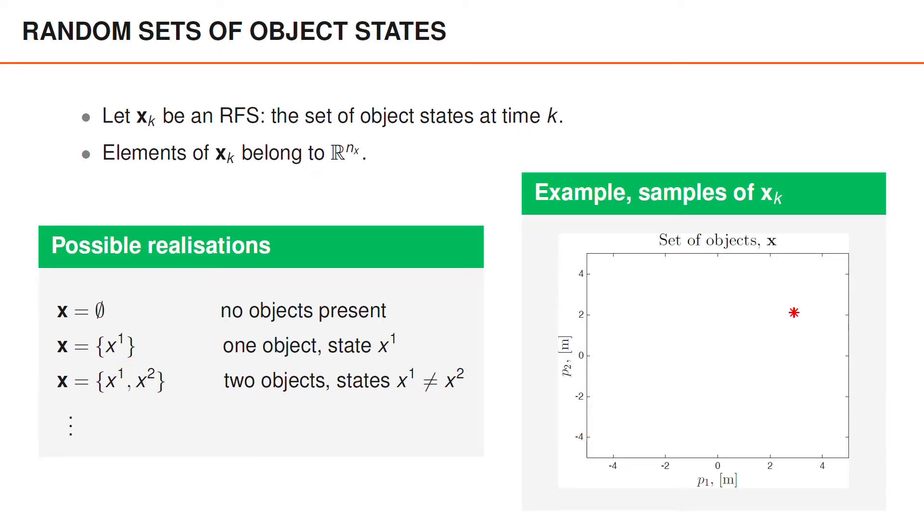Imagine that the posterior distribution is such that we believe that there might be an object around and another object around, but that we are uncertain about the presence of both objects. In that case, the following could be possible realizations of the set of objects.